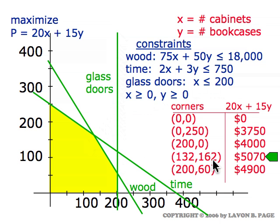We're not using all 200 of the available glass doors. In fact, for that corner point, we're only using 132 glass doors because we're making 132 glass door cabinets. So, in fact, there would be, since there are 200 available, if we're only making 132 cabinets using 132 glass doors, that means we would actually have 68 glass doors that would be left over. So, yes, there are leftovers, and the leftover in this particular example is 68 leftover glass doors that are not used.